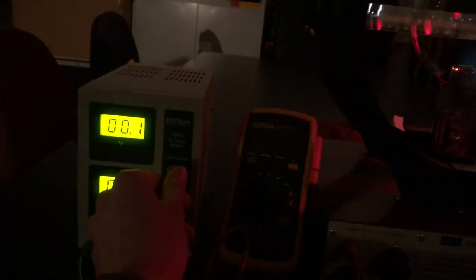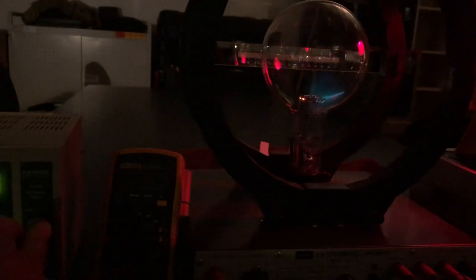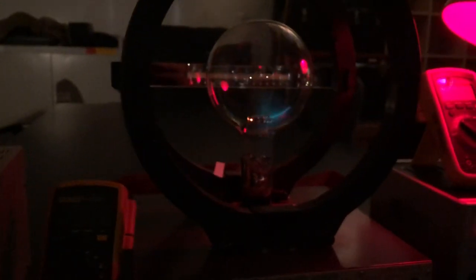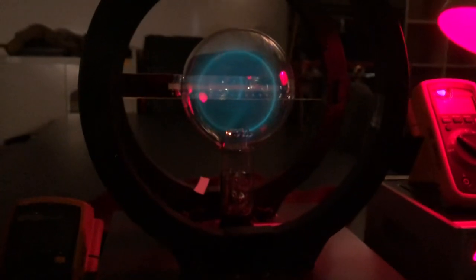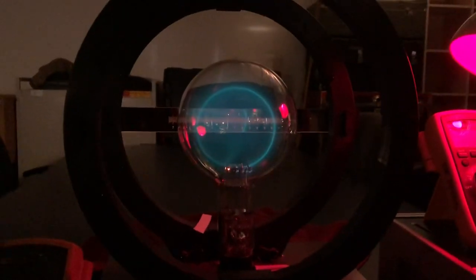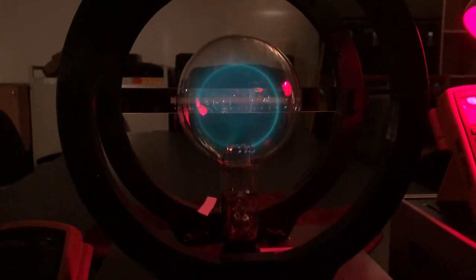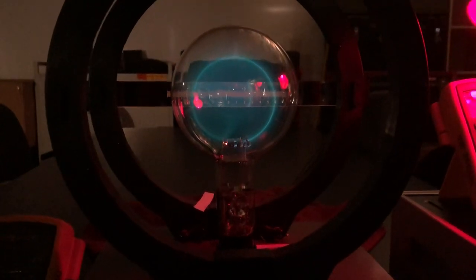So let's see what happens as we turn up the current. All of a sudden, it starts bending, right? Instead of traveling a straight line, the magnetic field is able to bend the path of the electrons into a circle.